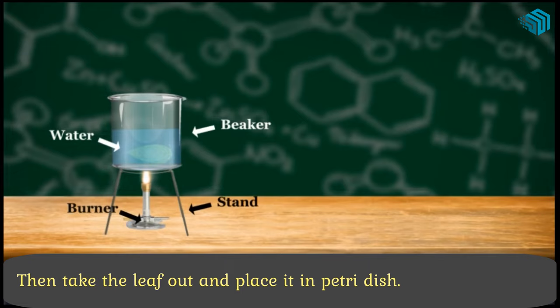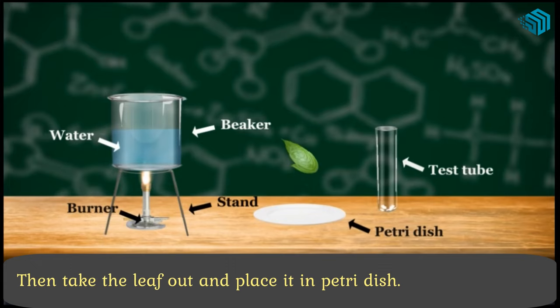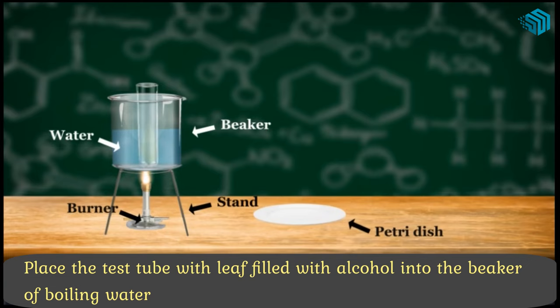Then take the leaf out and place it in a petri dish. Now put the leaf into a test tube and pour alcohol to cover the leaf. Place the test tube with the leaf filled with alcohol in the beaker of boiling water.